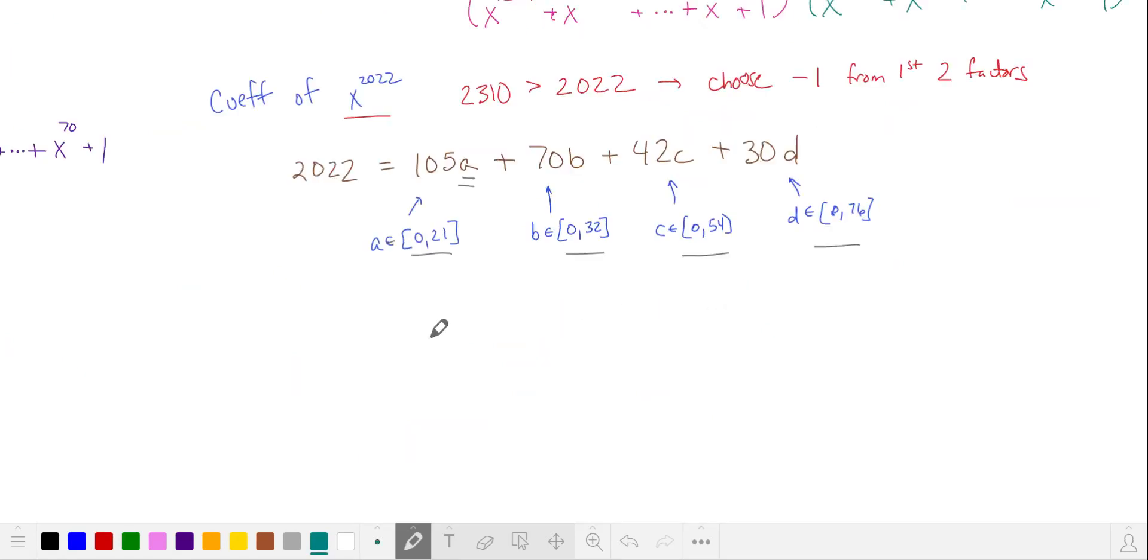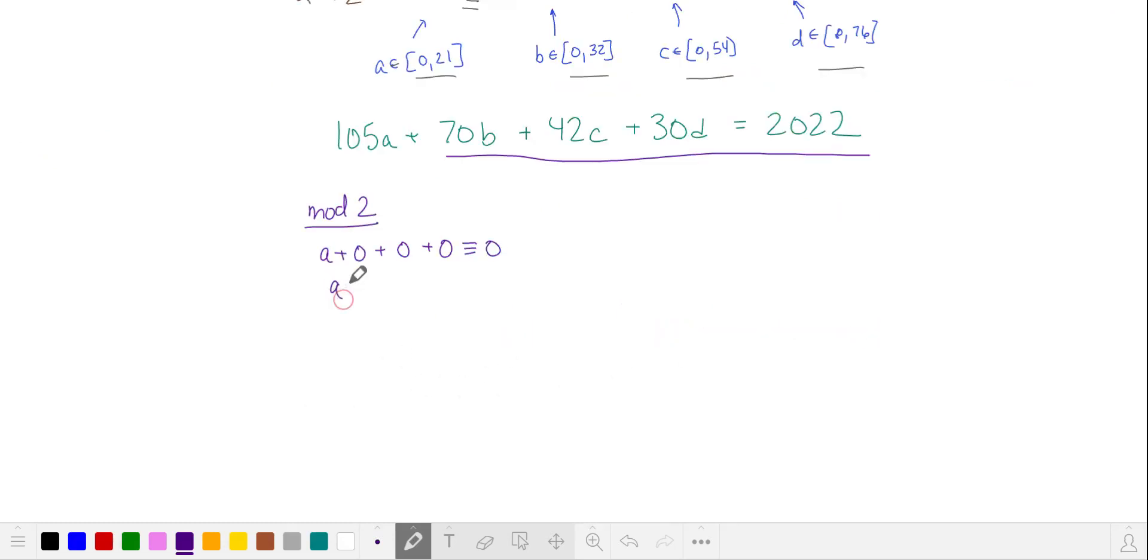Where a, b, c, and d are integers. We see that all of the terms in this equation, except for the first term, are even. We have a is 0 in mod 2, so we can write a as a product of 2.